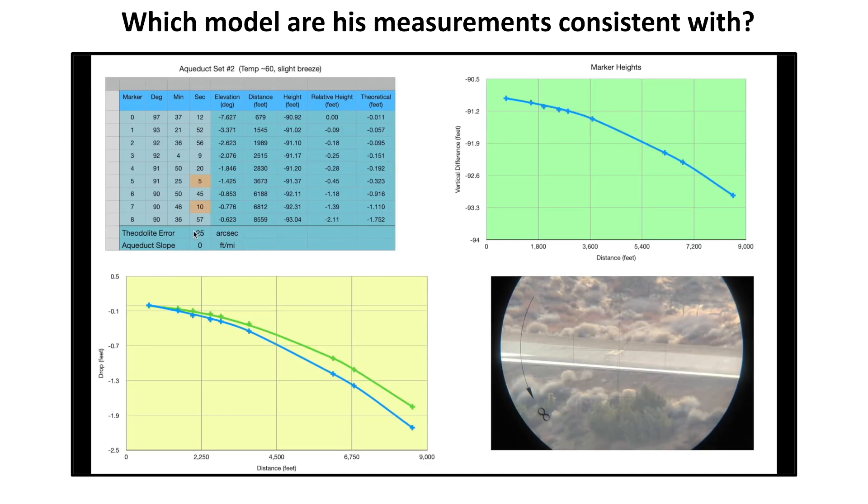But before I hit play on this little clip, I should try to explain what's going on in the graph in the top left. So for each marker, he's measured a vertical angle to it. And then on Google Earth, he's measured the distance over the ground to each marker. Then he's done some simple trigonometry to work out how many feet each marker is below his elevation. So remember, he's up on a hill doing this. So that first row, marker zero, he's 90.92 feet above it. In the next column, the relative height in feet, he's effectively zeroed out that elevation. So that's his starting point for the elevation of the concrete walls.